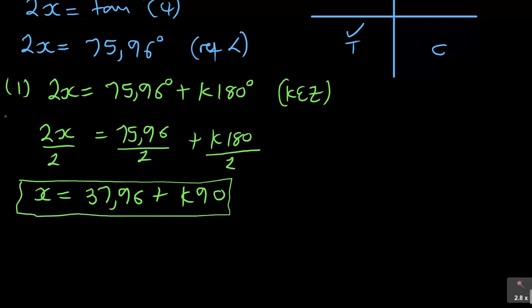Now if you are dealing with quadrant number 2, so you're going to have, now, in quadrant number 2, remember, in the third quadrant, it is 180 plus theta. So what you're going to have is, you're going to say 2x is equal to, now, the reference angle, which is 180 plus 75.96 plus K 180.